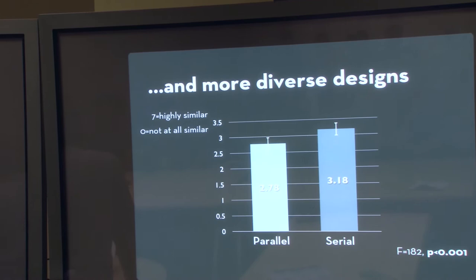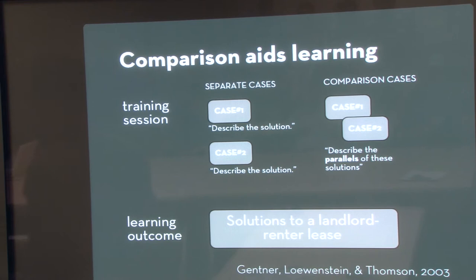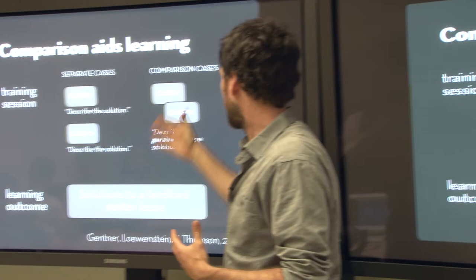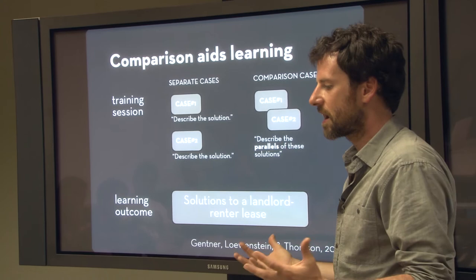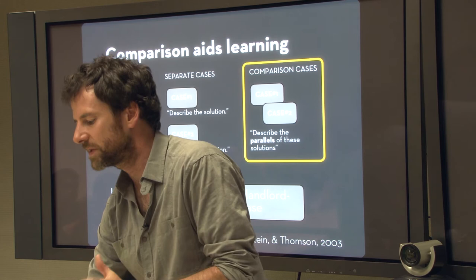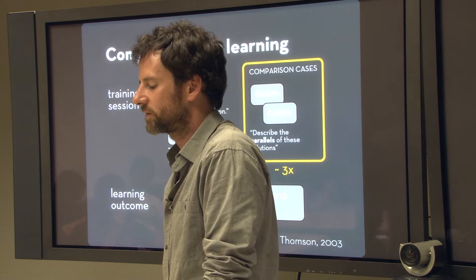Notably, the designs that emerged in the parallel condition were also more diverse. As Dedrie Gettner and colleagues have shown, comparison aids learning. In her work on improving the business school case study model, her insight is that given how fundamental analogical reasoning is to cognition, why not have people explicitly build analogical structures — tell me the similarities and differences between these situations. When people explicitly think about parallels, their ability to transfer that knowledge to a new setting goes up dramatically. I think we see that in parallel prototyping as well.